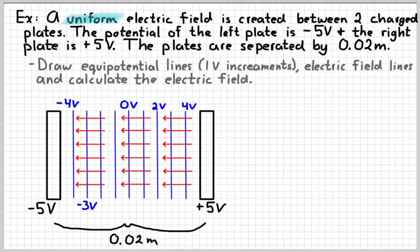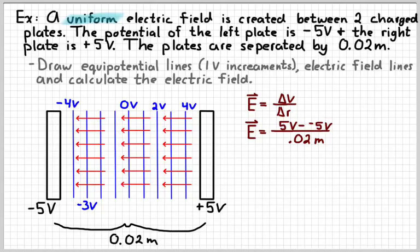The electric field would go from positive to negative, and it would be to the left in this situation. And then all those arrows should be the same size, again, because it's uniform. And so here's another example where we see that those are perpendicular to each other. And then I can use this equation to figure out the size of the electric field, because we know the change in electric potential, and we know what the separation is. We know that we go from plus 5 to minus 5 in a space of 0.02 meters.